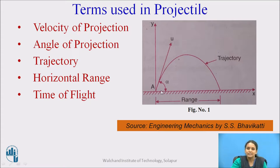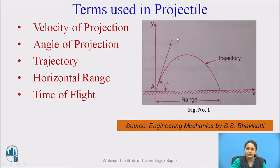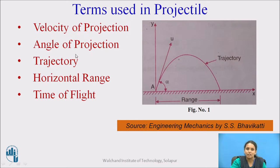Velocity of the projectile is the velocity with which the particle is projected upward. In this figure, u is the velocity of the particle, so it will have some initial velocity — this velocity is called the velocity of projection. The angle made by this particle with the horizontal surface is called the angle of projection, which is alpha, as shown in the figure.